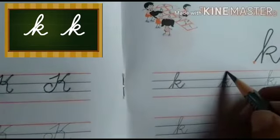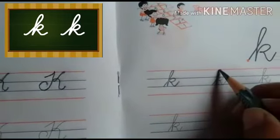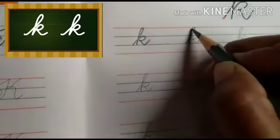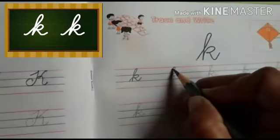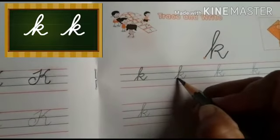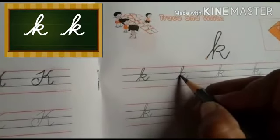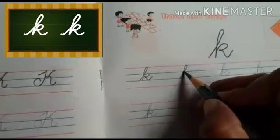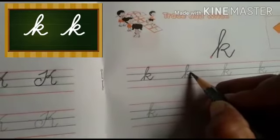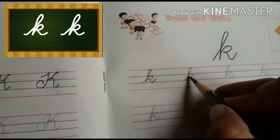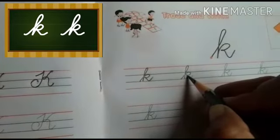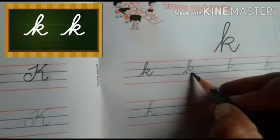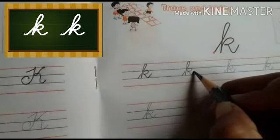Aapko slant line se, make a loop — thoda sa round le kar. Come down with a slant line, niche aana hai. And little bit go up, waapas upar ja kar. Second line pe aa kar round bana kar, isko touch karo. And come down third line, slant line ke saath niche aana hai, and thoda sa upar.